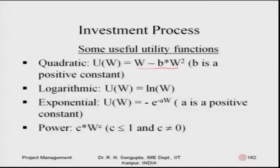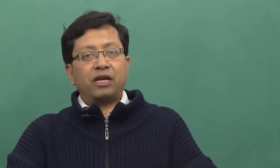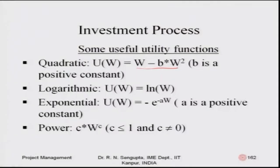The logarithmic utility function is given by ln(W) — the neperian log. This was used in an earlier slide where investments and prices were given and we found the expected value of utility using ln(p). The exponential utility function is given by minus e to the power minus aW, where W is wealth and a is a positive constant parameter. The power function is given by c·W^c, where c is less than zero and c is not less than one and not zero.